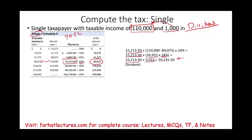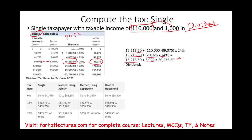How do we compute taxes on the $1,000 dividend? We go back to the dividend tax rate for 2022. This individual's taxable income is between $41,676 and $459,750, so the tax rate is 15%. Therefore, $1,000 × 15% = $150 in dividend tax. The total tax is $20,235.50 plus $150, which equals $20,385.50.